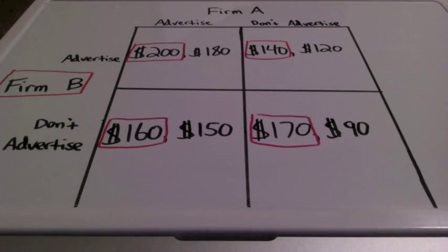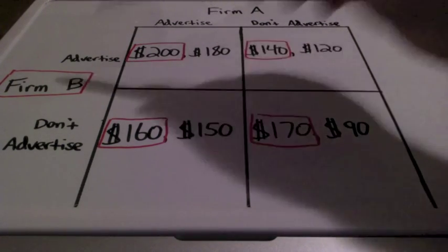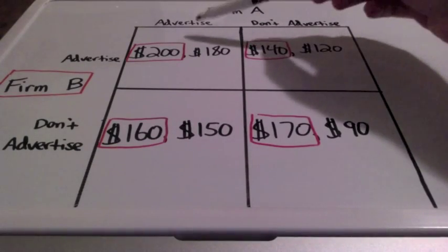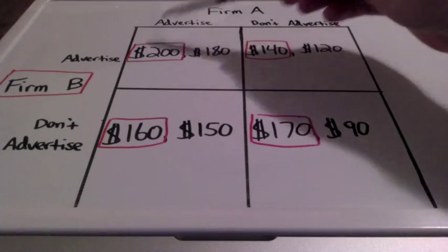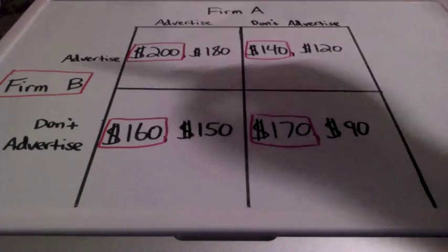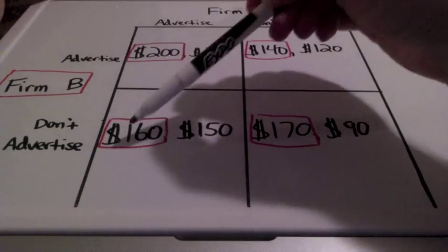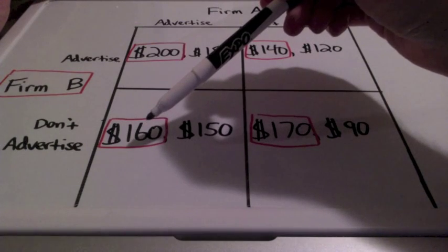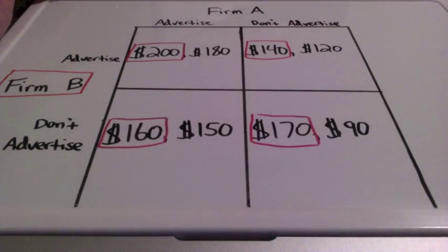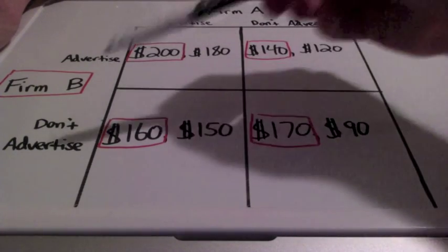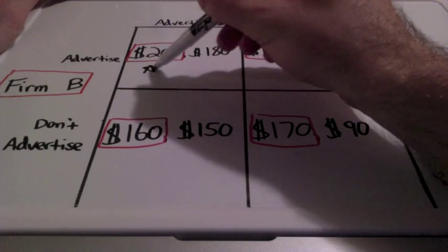When firm A is going to advertise, what is firm B going to do? We're only going to be taking a look at these two boxes. Is firm B going to advertise and make $200 in profits, or choose not to advertise and make $160 in profits? Well, $200 is greater than $160, so firm B is going to advertise. We're going to put a little star here so we can remember that for later.